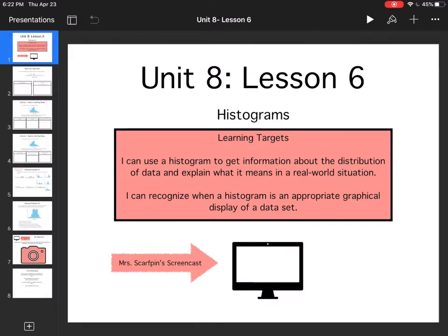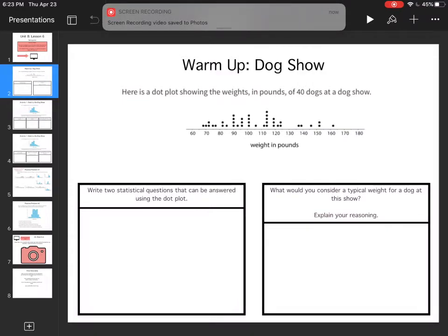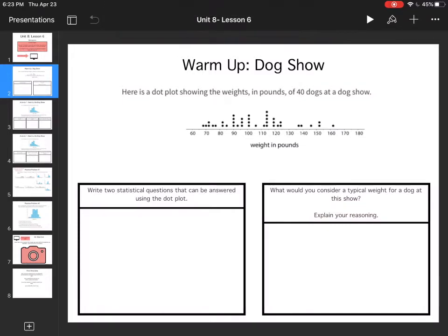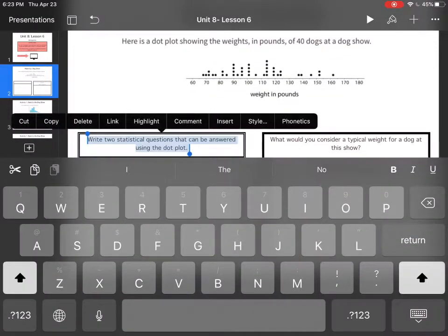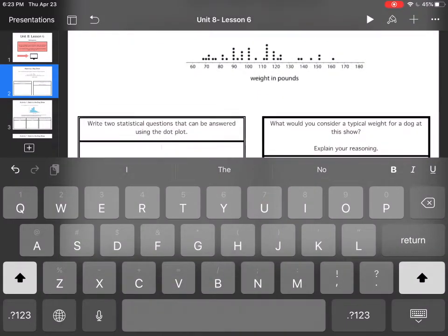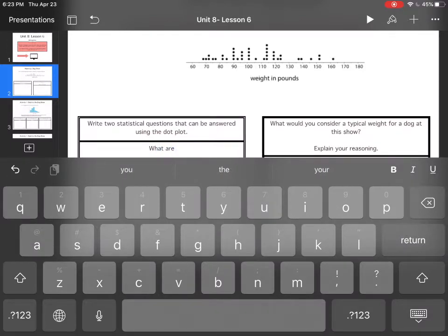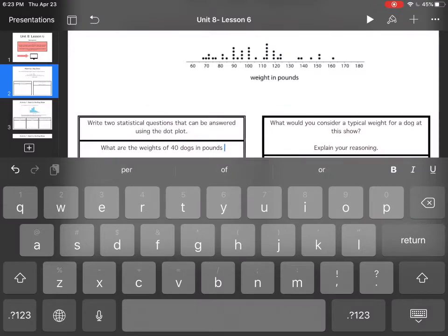For our warm-up today we're looking at a dog show. Here is a dot plot that shows the weights in pounds of 40 dogs, so I have to know that there are 40 dots there. Write two statistical questions that can be answered using the dot plot. Statistical questions ask multiple people and have a variety of answers.